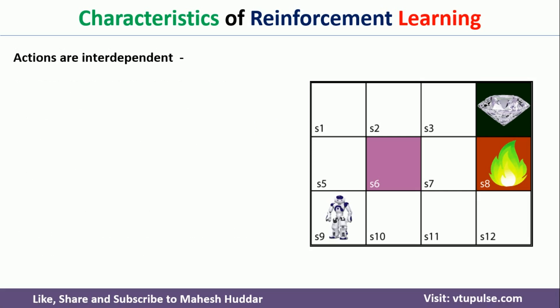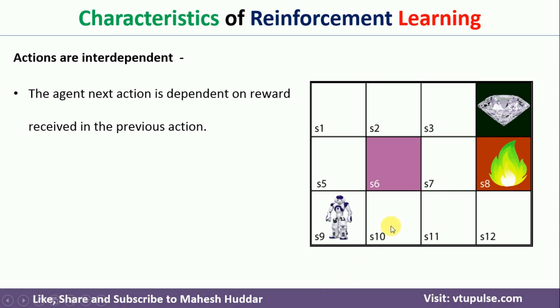The second characteristic is that the actions the agent performs are interdependent. For example, if the agent performs a right action from S9 to S10, whatever action it can perform next depends on the reward it received in the previous step. If it got a positive reward, it will continue on that path. If it got a negative reward, it will stop that path and take a different one.